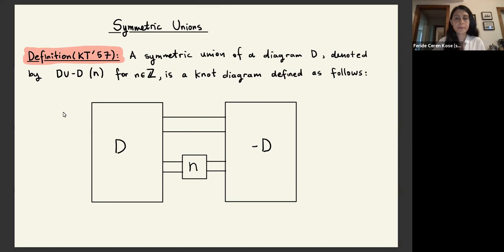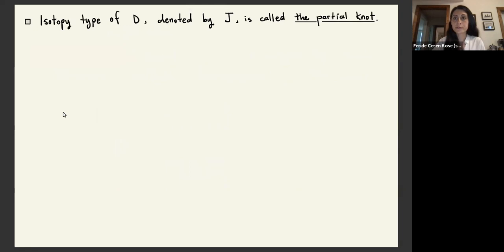And the isotopy type of D, denoted by J, is called the partial knot. And we know that the partial knots carry a lot of information about symmetric unions.